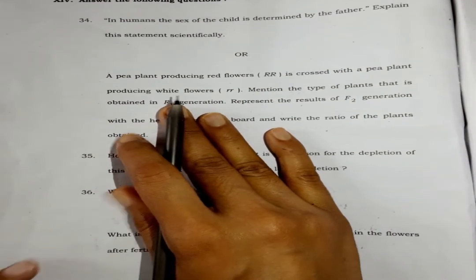So the question is related to genetics. This question is from monohybrid cross. A pea plant producing red flowers is crossed with a pea plant producing white flowers. Mention the type of plant that is obtained in F1 generation. Represent the result of F2 generation with the help of a checkerboard and write the ratio of the plants obtained.